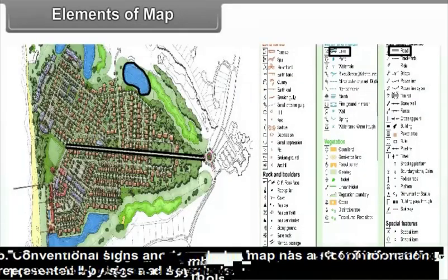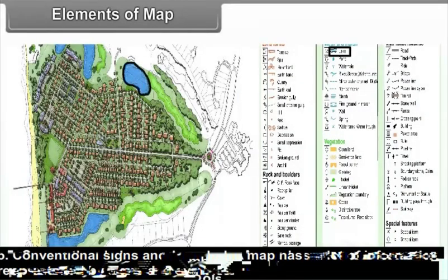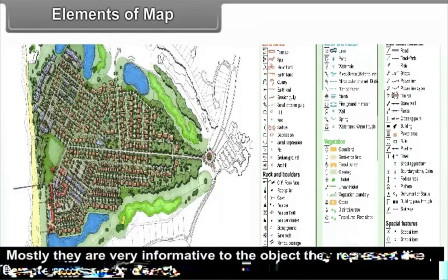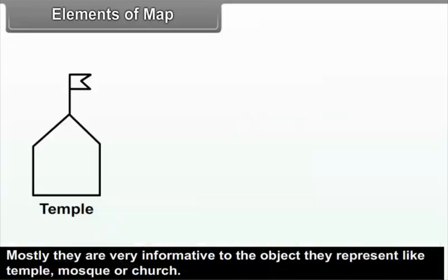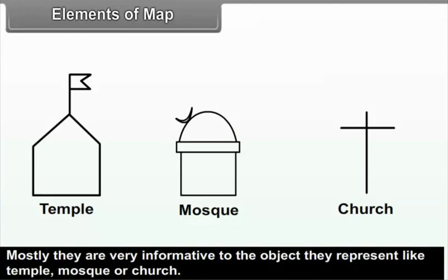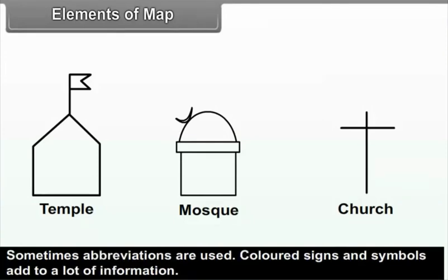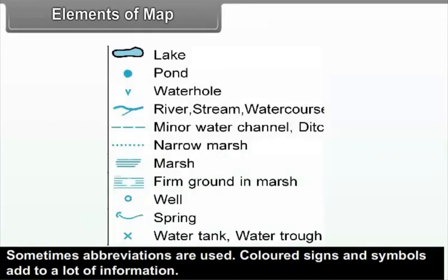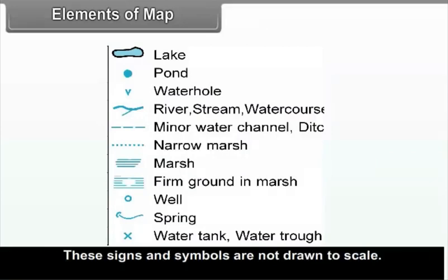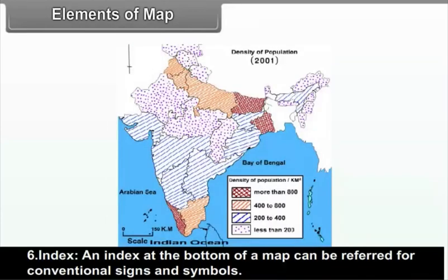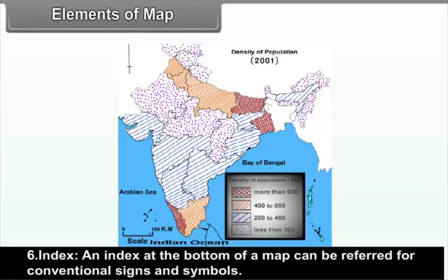Conventional signs and symbols: A map has a lot of information represented by signs and symbols, which are very informative about the objects they represent, like a temple, mosque, or church. Sometimes abbreviations are used. Colored signs and symbols add a lot of information, though these signs and symbols are not drawn to scale. An index at the bottom of a map can be referred to for conventional signs and symbols.